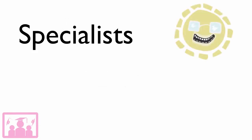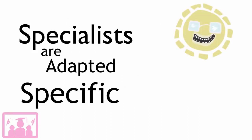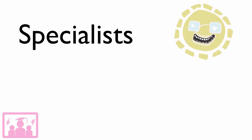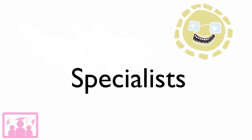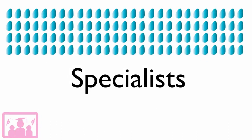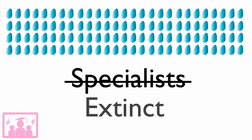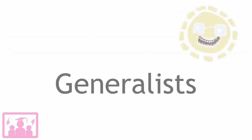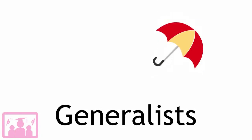Because specialists are adapted to more specific conditions than generalists, they do not cope well with environmental change and they are more likely to go extinct. Generalists cope better because they can adapt when the environment changes.